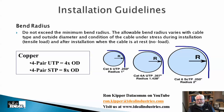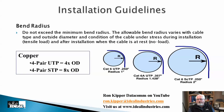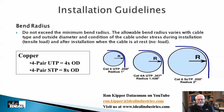Bending radius for UTP cable should be no tighter than four times the cable's outer diameter. Most category cable is roughly a quarter inch in diameter, so the minimum bend radius is one inch — meaning the tightest loop you should form is two inches in diameter. Cat 6a and larger cables require an even larger bend radius. STP cable requires eight times the outer diameter, likely to prevent deforming the internal shield.